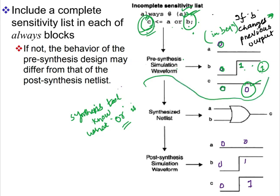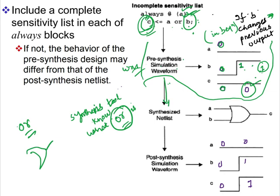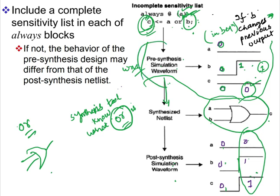That means the hardware generated up to this level is wrong, because this is not the actual behavior of A | B. If we synthesize this, the synthesis tool knows what 'or' means and will generate an OR gate with inputs A and B and output C. The post-synthesis result will correctly give 0|0=0, and if B changes, 0|1=1 — which is the correct hardware result. So there is a mismatch between the pre-synthesis simulation waveform and the post-synthesis simulation waveform, and this is exactly the simulation and synthesis mismatch described earlier.